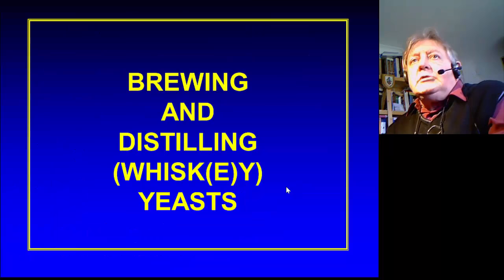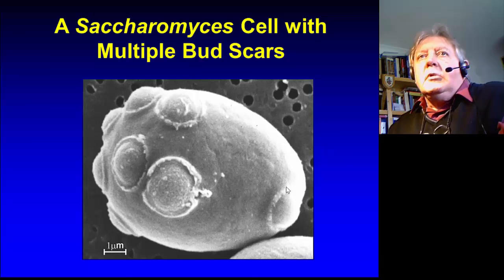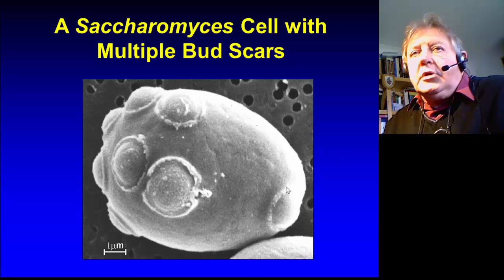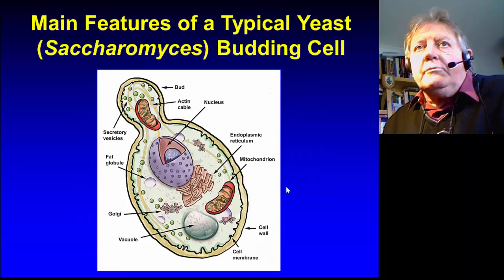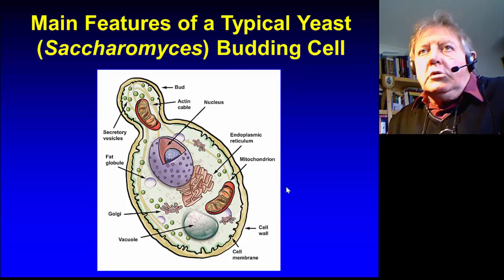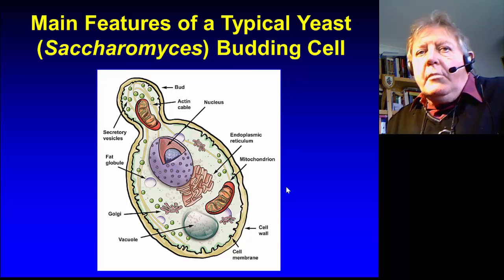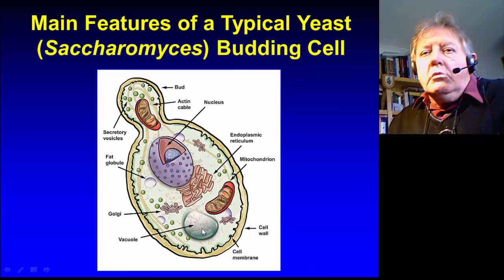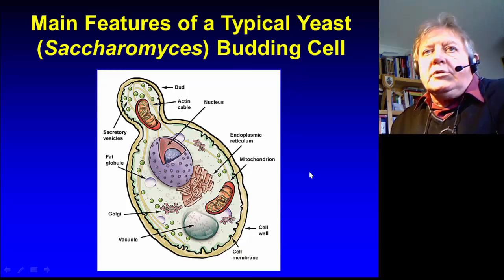I'd like to focus now on brewing and distilling whiskey yeast. That single cell of Saccharomyces with multiple bud scars — a yeast of that nature would have one mother scar and a number of bud scars. The electron micrograph shows the bud scars very well. The intercellular structure of yeast is very similar to that of mammals. It has a number of organelles: the nucleus, and the endoplasmic reticulum for protein synthesis.